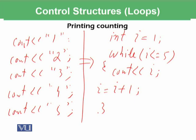Such a loop was discussed in a previous module. Let's refresh: it starts with a base condition where i is initially 1, then it checks the condition — 1 is less than or equal to 5 — the condition is true. If the condition is true, the two statements will be executed, and it will print i. Currently i is 1, so 1 will be printed.